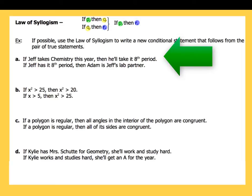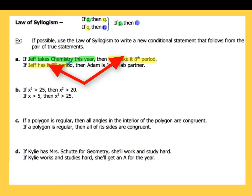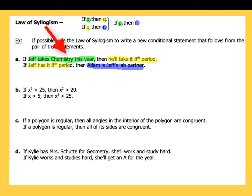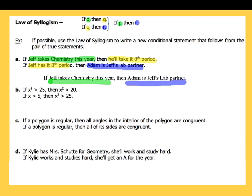In our first example, we've got: if Jeff takes chemistry this year, then he'll have an eighth period. And if Jeff has an eighth period, then Adam is Jeff's lab partner. The hypothesis of my second statement is the same thing as the conclusion from the first statement. Taking the conclusion of the second statement and the hypothesis from the first, I can put those together. My conclusion would be: if Jeff takes chemistry this year, then Adam is Jeff's lab partner.